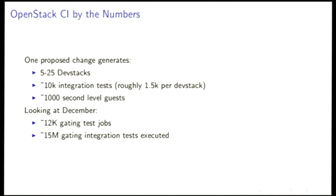I'll start with some raw numbers to give an estimate on how big things are. When anyone pushes a change to OpenStack, the CI system kicks off 5 to 25 dev stacks, which is a self-contained bash script that brings up a running OpenStack cloud and we interact with it with second-level virtualization. As part of that, we run about 10,000 integration tests using that environment.